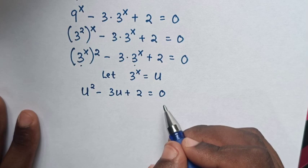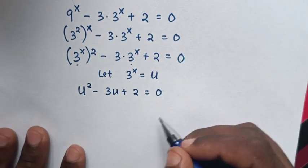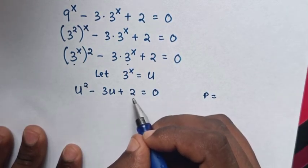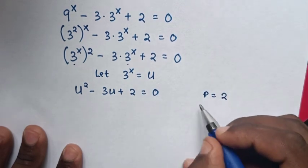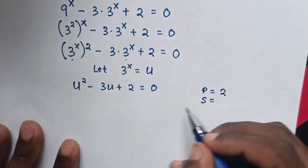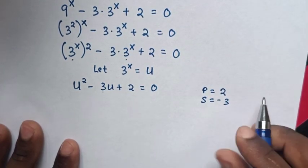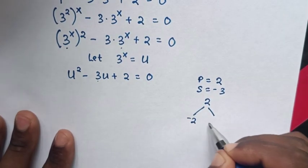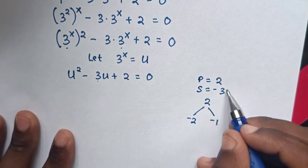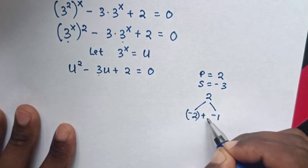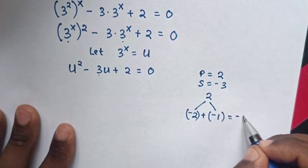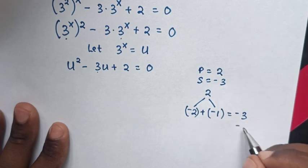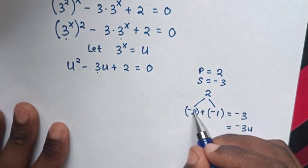Then this is a quadratic equation, so we solve it by factorization. The product is the coefficient of u squared — which is 1 — times the constant, which is 2, so 1 times 2 is 2. The sum is the coefficient of u, which is negative 3. To get a product of 2 and a sum of negative 3, the factors are negative 2 and negative 1, since negative 2 plus negative 1 is negative 3.